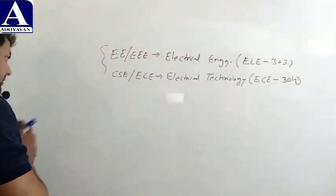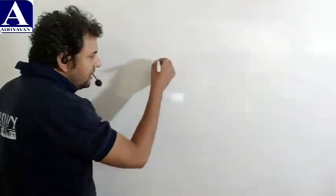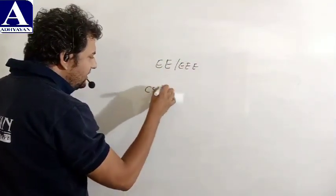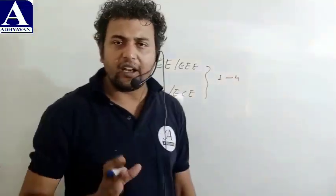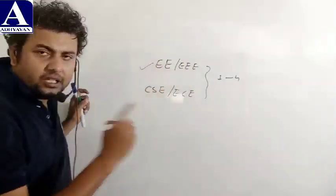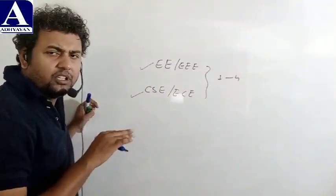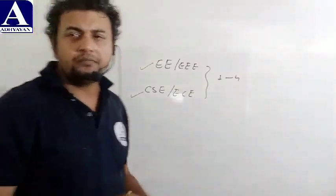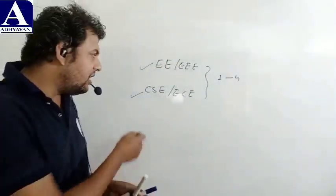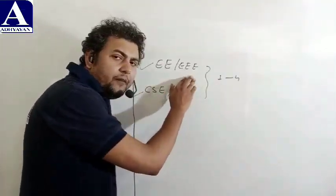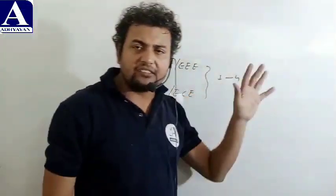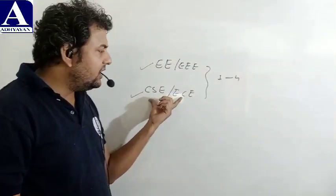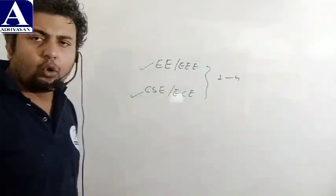Electrical engineering या electrical technology paper के first unit की बात करें तो double E, triple E और CSE, ECE - इन सभी के first unit से fourth unit तक के units common हैं। उसके बाद इनका एक unit अलग है। Double E और triple E में थोड़ा machines पढ़ना है - AC machine, DC machine, और brief idea of power system। CSE और ECE में AC वाले part को magnetic circuit के बाद introduce किया गया है। Fourth unit के बाद syllabus में differences देखने को मिलते हैं। Double E, triple E का EC और CS के साथ थोड़ा सा difference है।